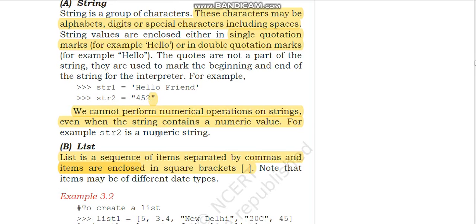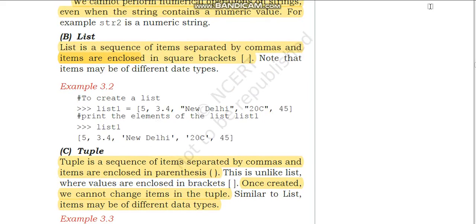The next sequence type is list. List is a sequence of items separated by commas and enclosed in square brackets. list1 is the name of the variable — you can see multiple values are enclosed within square brackets. All the values can be of different data types: 5 is a number, 3.4 is a float, 'New Delhi' is a string, '20c' is also a string, 45 is a number. All these come under one variable list1. If you print list1, the output is 5, 3.4, New Delhi, 20c, and 45.